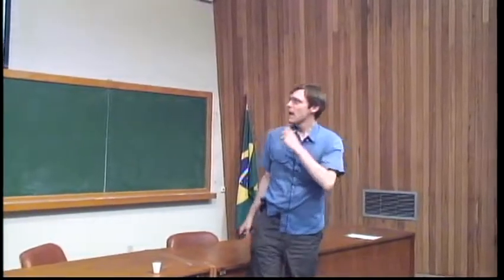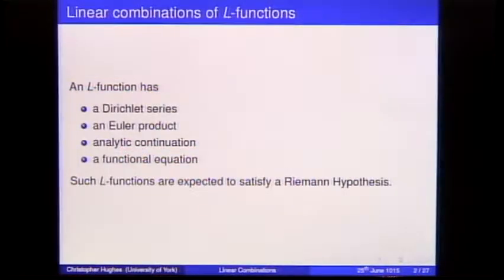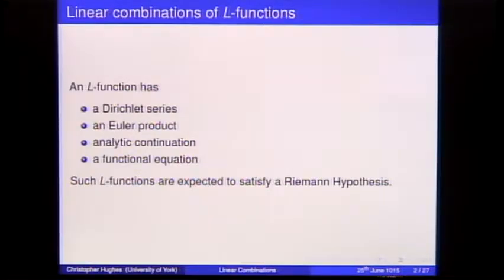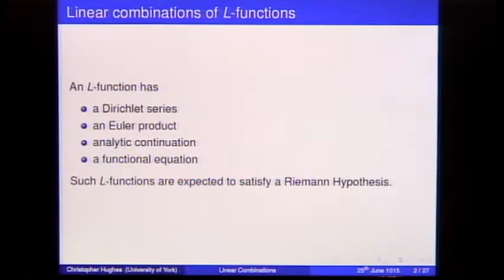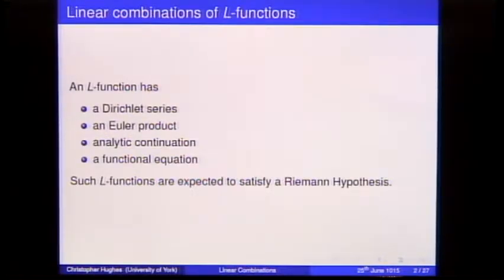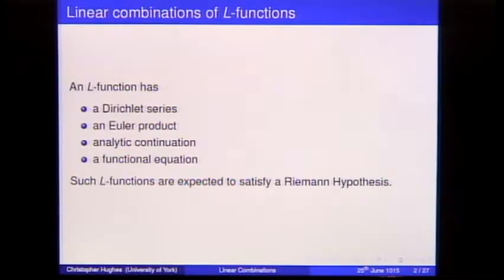So what do we know? Typically an L-function is defined by various axioms. It should have a Dirichlet series, an Euler product, a functional equation, and some analytic continuation. If it satisfies those axioms, made precise by Selberg, then we expect it to have a Riemann hypothesis, and all critical zeros lie on a particular line — with real part of S equals one-half.